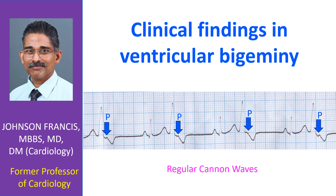Ventricular premature beats are the commonest cause of a cannon wave, as they are much more frequent in incidence than complete heart block, which is the more well-known cause for cannon waves in the jugular venous pulse.